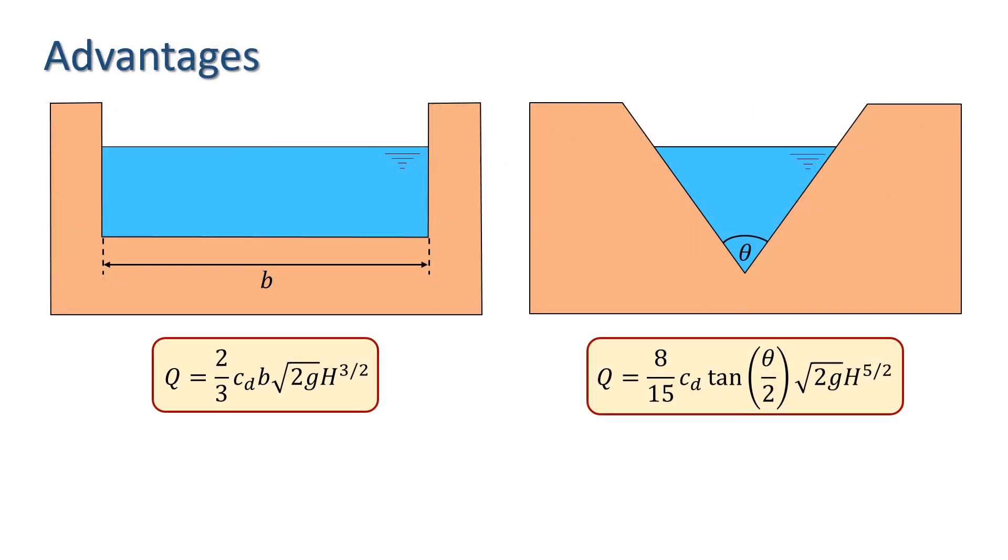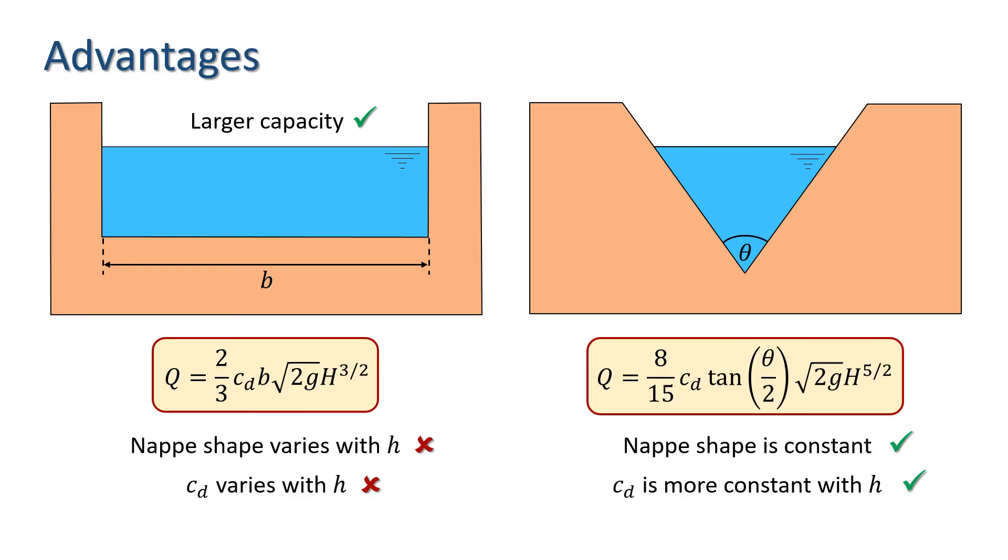Each of these two types of weir has its advantages. The sharp-crested rectangular weir has a larger capacity and therefore is a better choice for high discharges and wide channels. However, it has the disadvantage that the nappe shape changes with depth and consequently CD varies with H. In contrast, for the V-notch weir, the nappe retains its shape and CD varies much less. Also, for weirs with the same overall capacity, the V-notch is more accurate for low discharges, so tends to be a better choice for measuring highly variable flows.